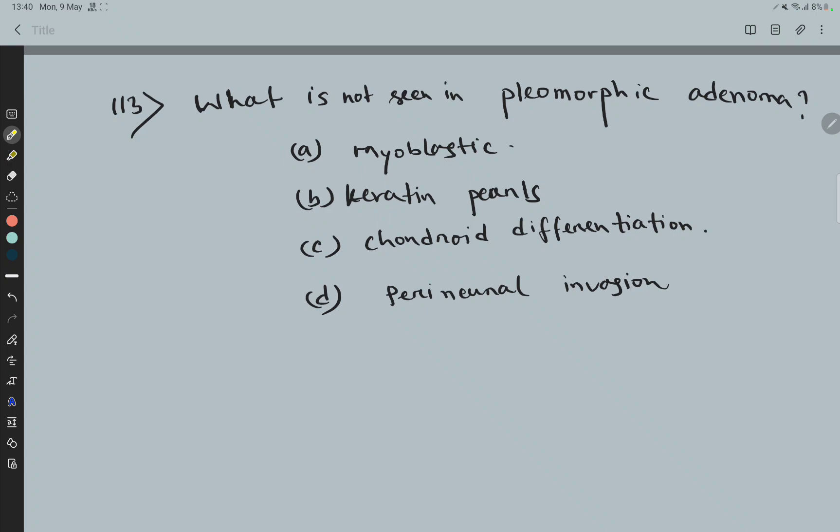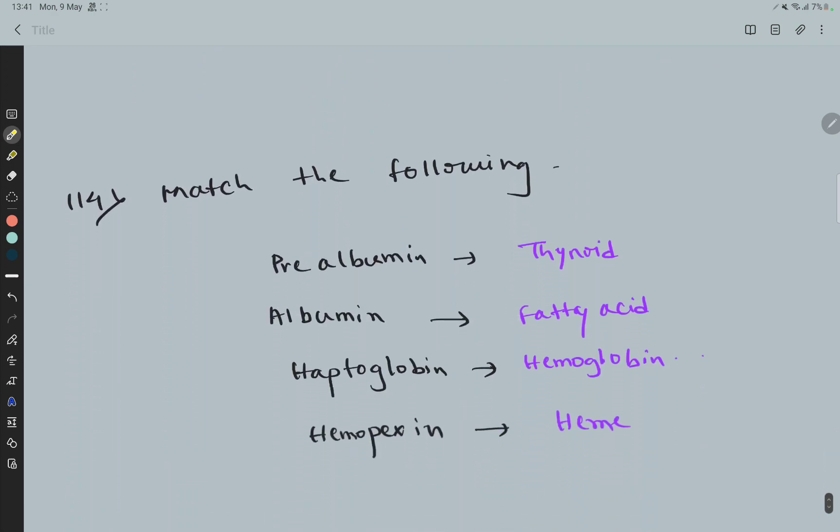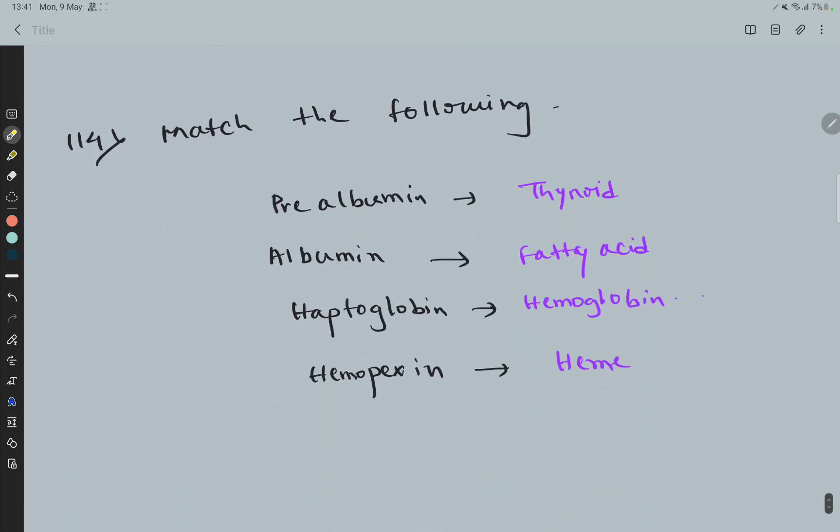...myoblastic, (b) keratin pearls, (c) chondroid differentiation, (d) perineural invasion. And correct option is keratin pearls. Question 114: Match the following...